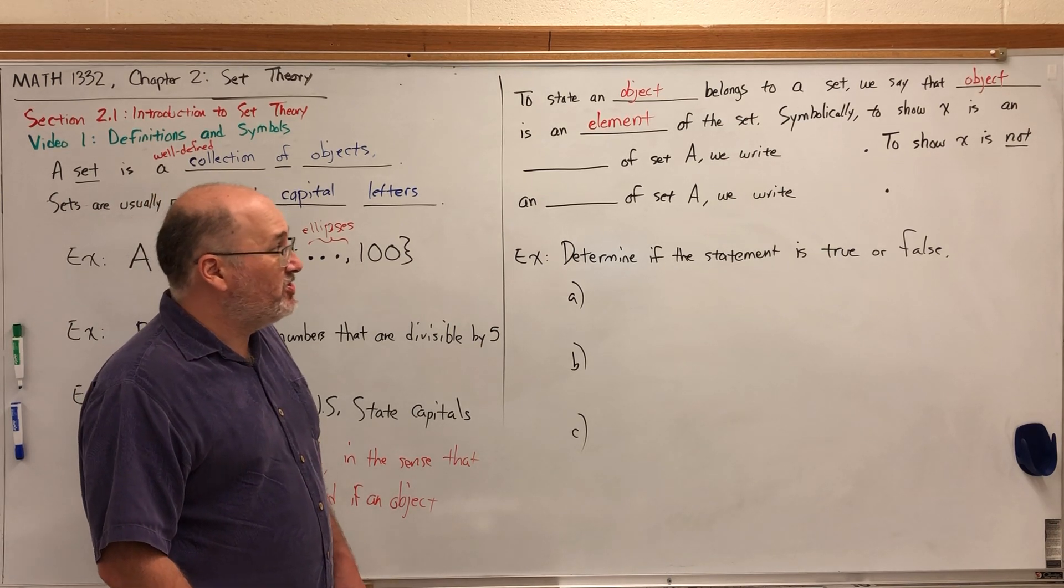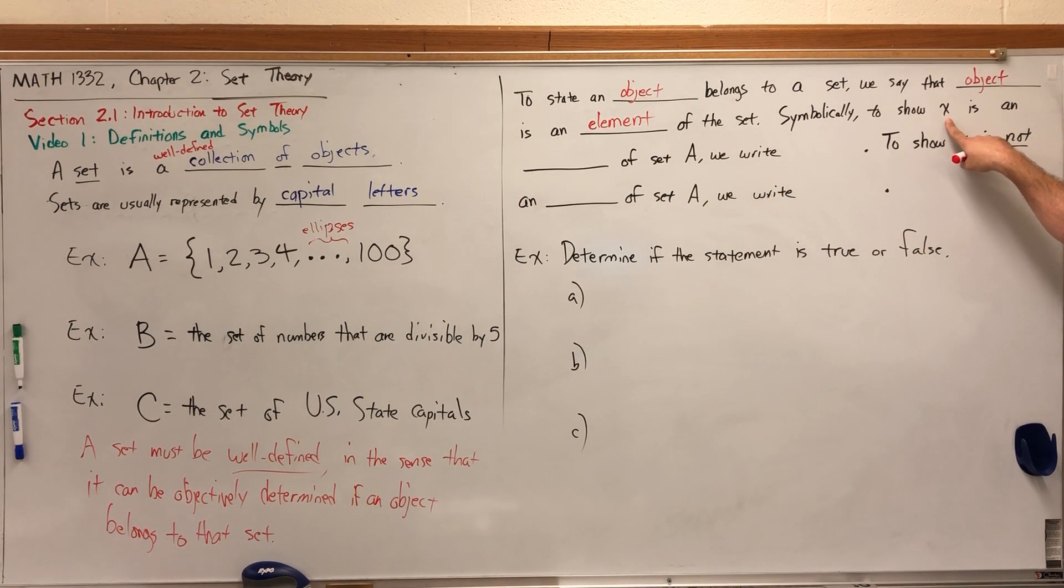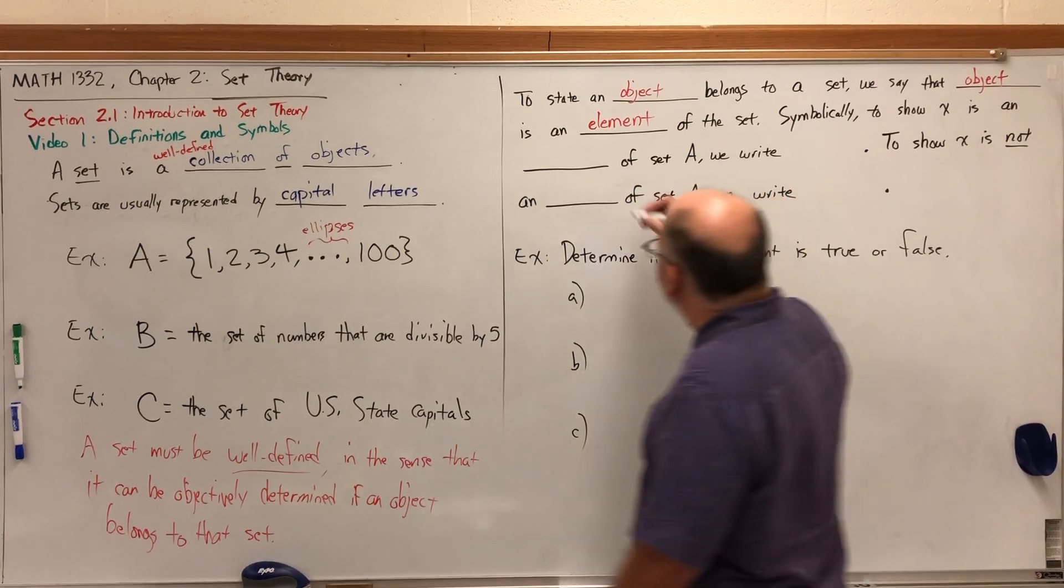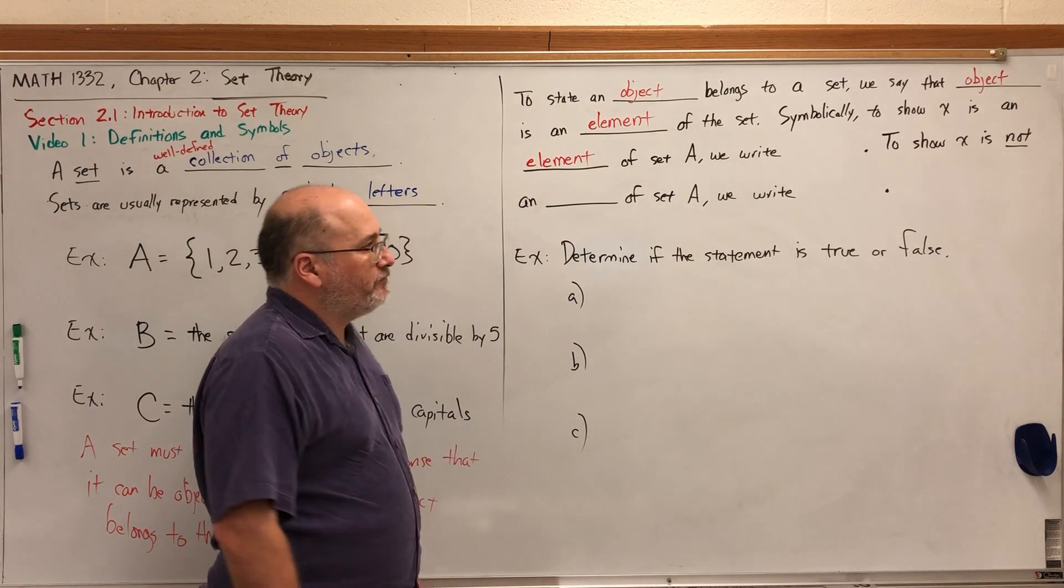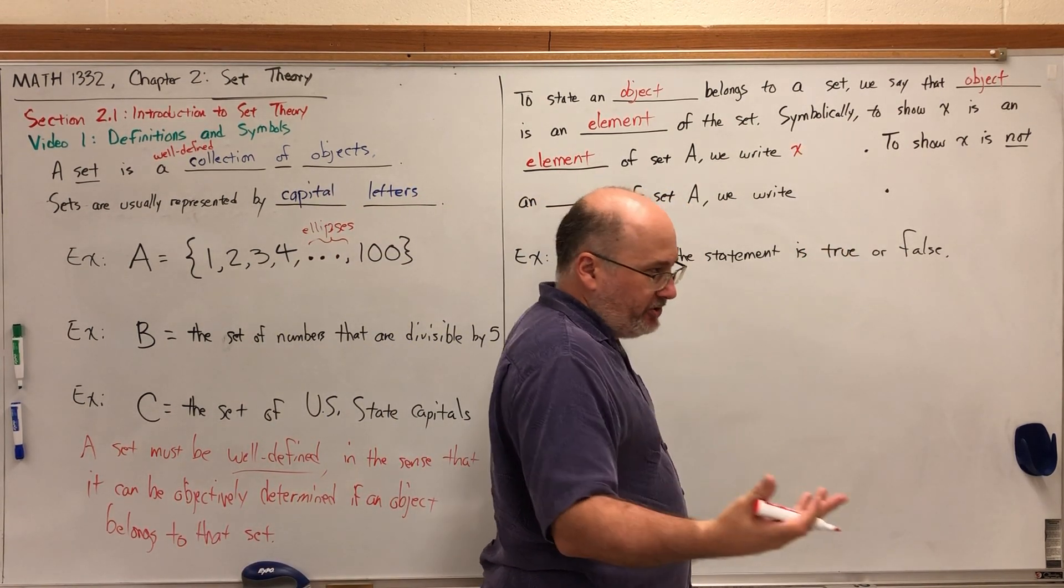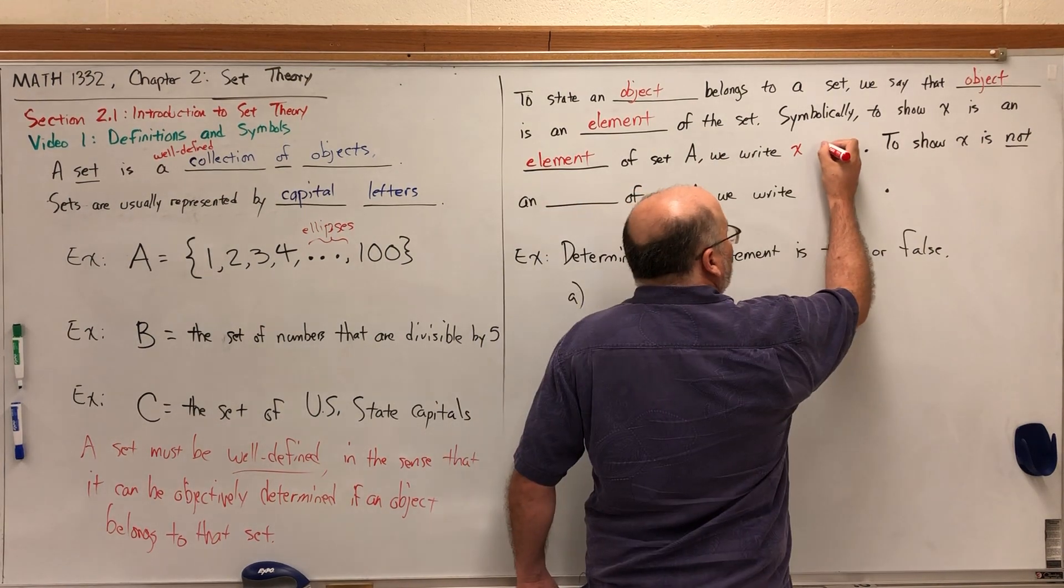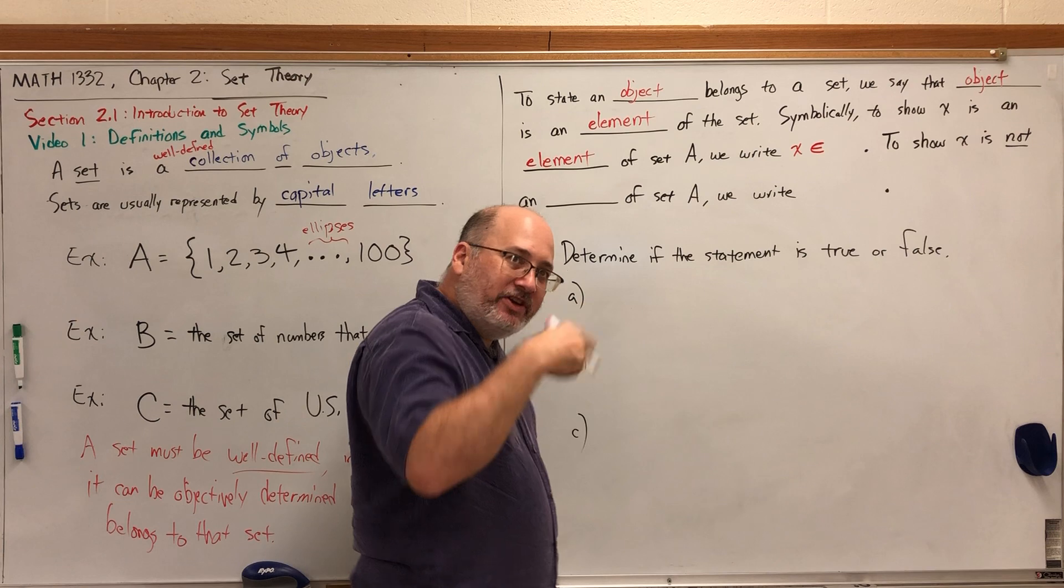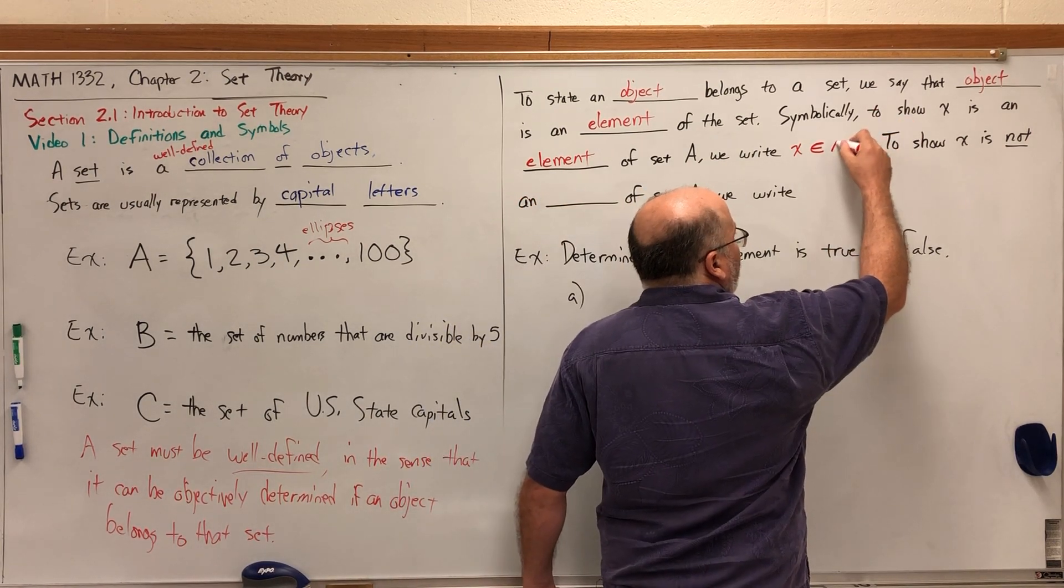Symbolically, to show a generic object, which we're just going to call x for the time being—notice it's lowercase because uppercase letters are used to represent sets—symbolically to show x is an element of set A, we write x, the symbol for the phrase 'is an element of,' which kind of looks like an E but it's really curvy, think of it as a sideways U with a line through it, and then we write the name of the set, capital A.